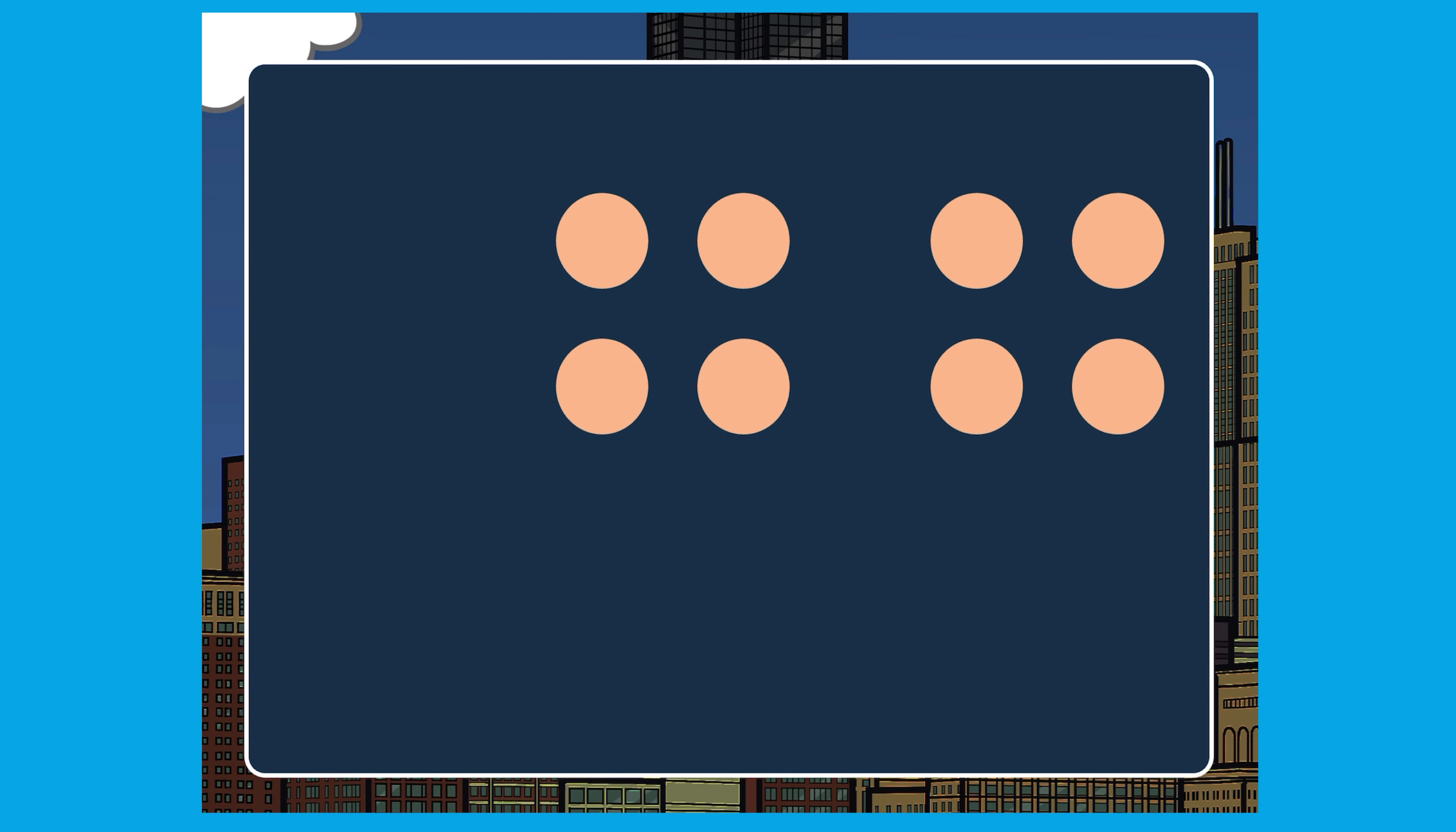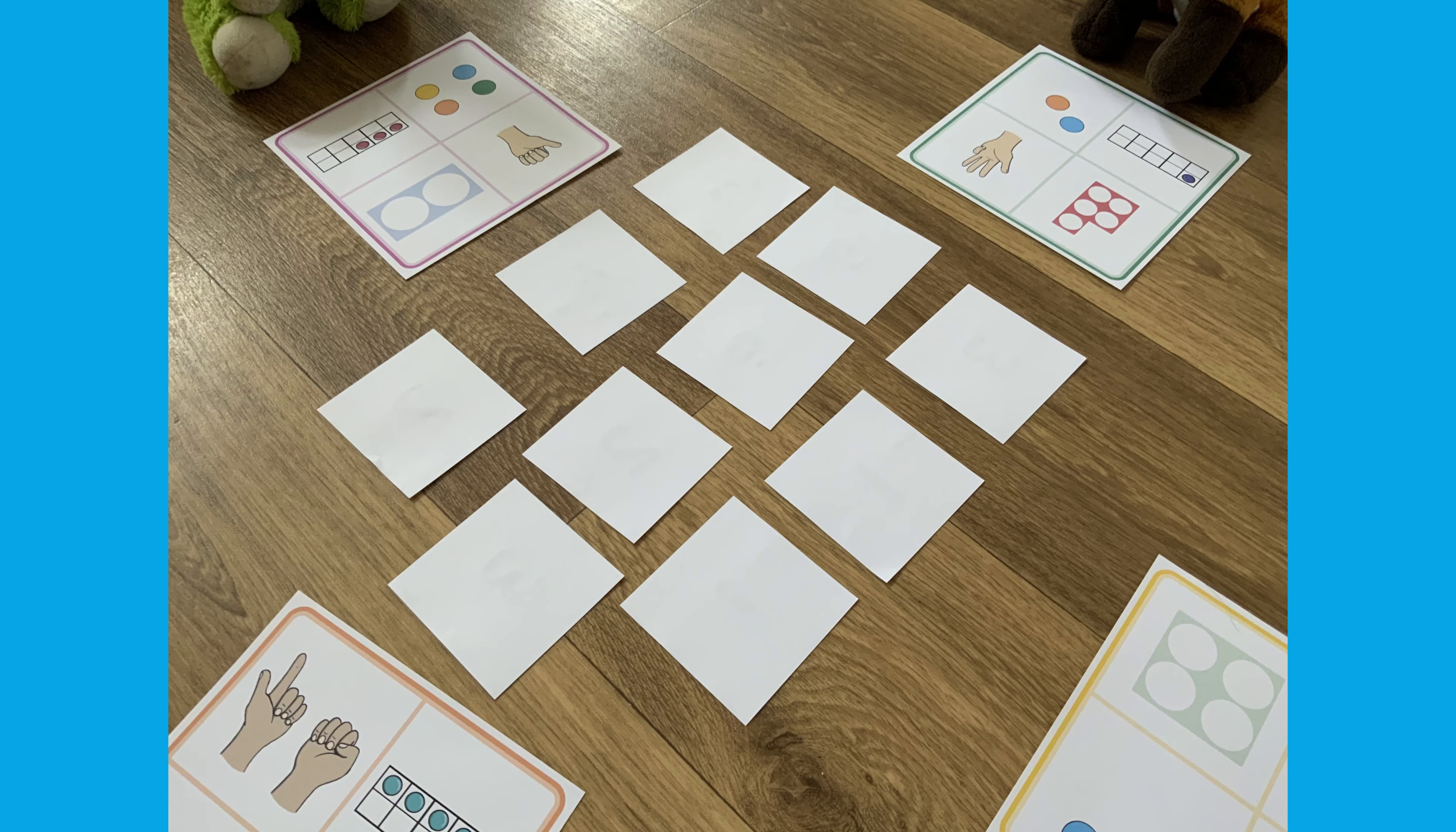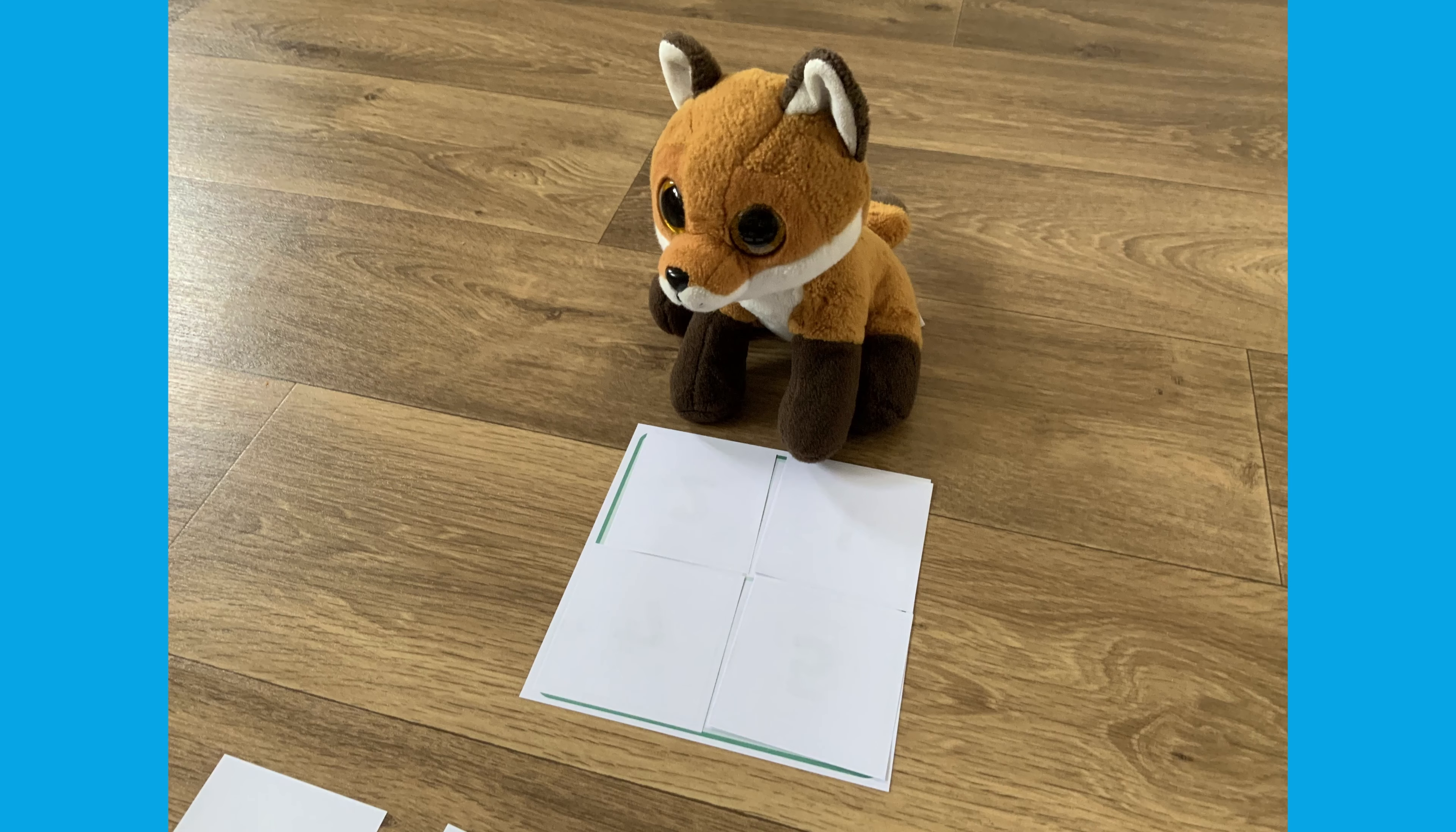Children will see the dots in familiar dice patterns, but also in other patterns as well. There are all sorts of follow-up activities that you can do, like this lovely subitising lotto game. Have fun and we'll see you soon.